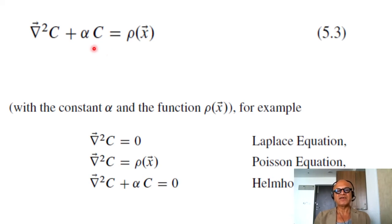So with constant alpha and the function rho x vector—sorry, I don't know why I said bar—for example, you get different well-known examples of initial value and boundary value problems. Here we have no time, so these are boundary value problems.